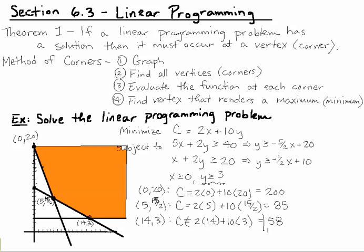58 is our minimum, the smallest value. C = 58. If they ask for the x and y values, those come from the vertex, which are x = 14 and y = 3.